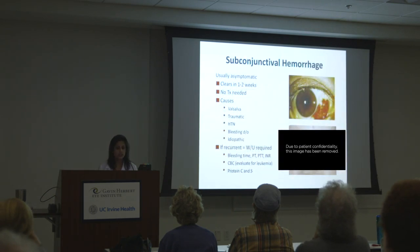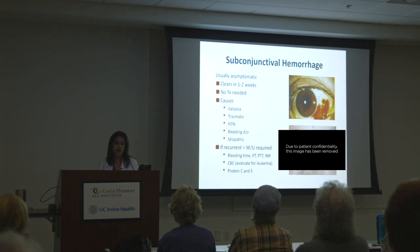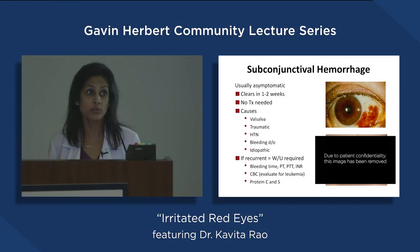Subconjunctival hemorrhage — a blood vessel in the white part of the eye breaks and bleeds. It looks really bad, but it's not harmful to the eye. It's usually caused by high blood pressure, straining, coughing, or being on blood thinners like Coumadin or aspirin, which make the vessels more fragile. It looks bad but resolves slowly over time, just like a bruise on the skin.